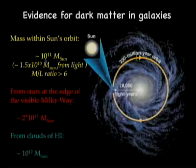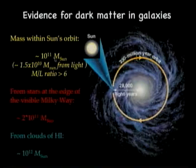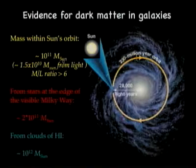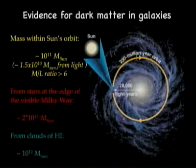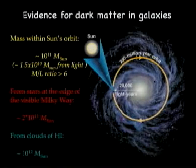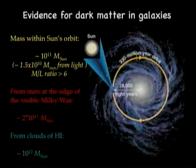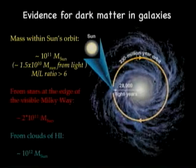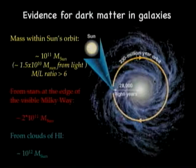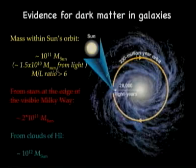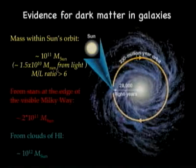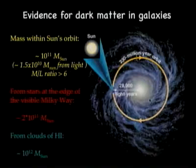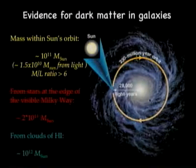The mass inside the sun's orbit turns out to be about 10 to the 11 times the mass of the sun — 100 billion times the mass of the sun. Now if we were to count the stars, and we know the relationship between luminosity and mass, we could also compute the mass that comes from stars alone. And the mass from stars alone is significantly lower — instead of being 100 billion, it's 15 billion. So apparently there is much more mass there than we can see from stars.